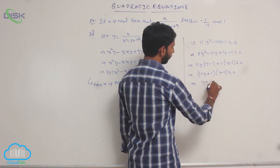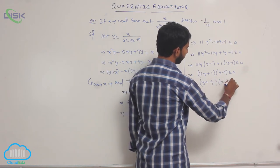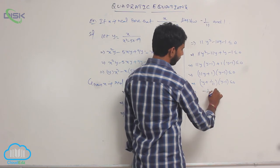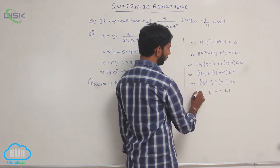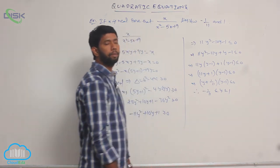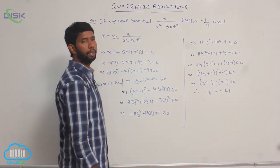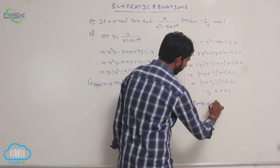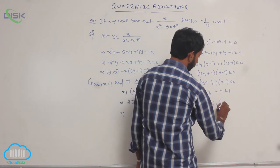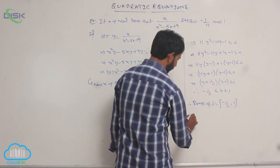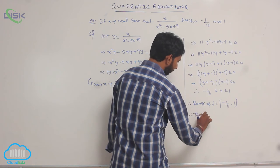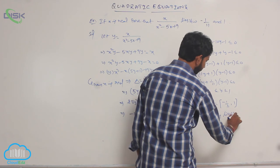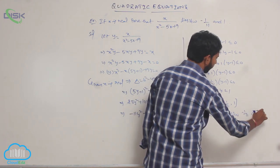This implies (y + 1/11)(y - 1) ≤ 0, which gives -1/11 ≤ y ≤ 1. Therefore, the range of f(x) is the closed interval [-1/11, 1], meaning the value of y lies between -1/11 and 1.